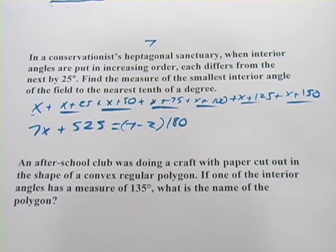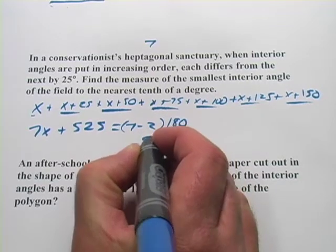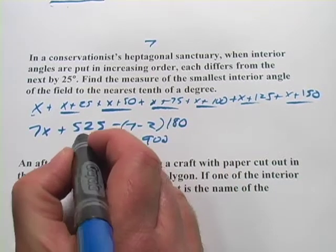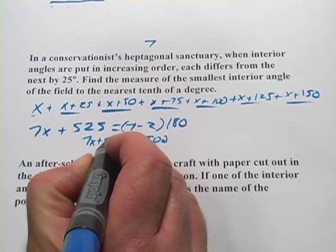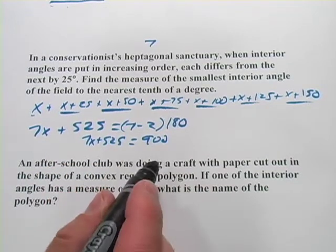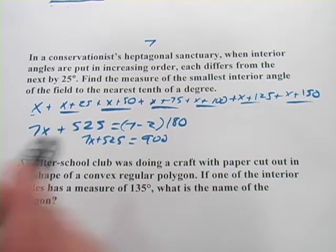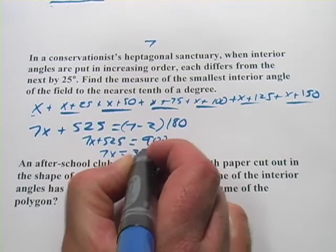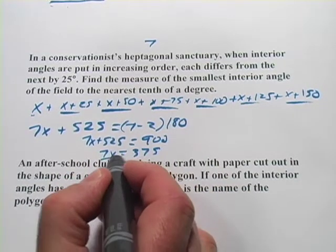So that is 5 times 180, which is 900. So we'll put 900 over here, and over here we've got 7x plus 525. Now we're going to subtract 525, and that means 7x equals 375.